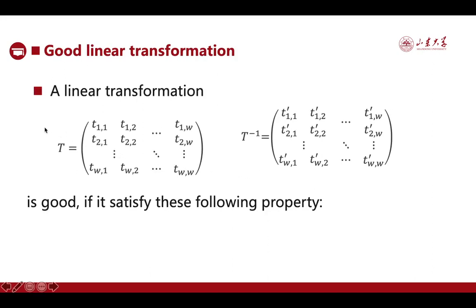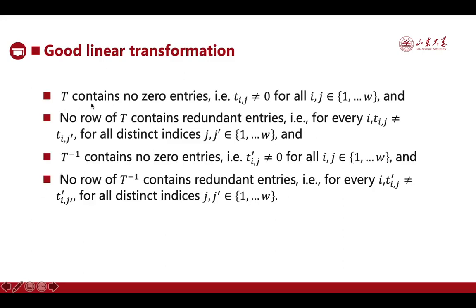Regarding which T is good: we write T and its inverse as W×W matrices. Then T is good if it satisfies: (1) T contains no zero entries; (2) no row of T contains redundant entries; (3) the inverse of T contains no zero entries; and (4) no row of the inverse of T contains redundant entries. The first and third conditions are also required for birthday-bound security of three-round linear SPNs, and the second and fourth conditions can be seen as a second-order extension of the first and third.